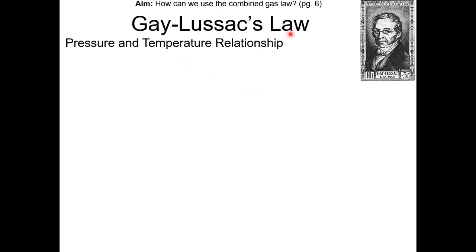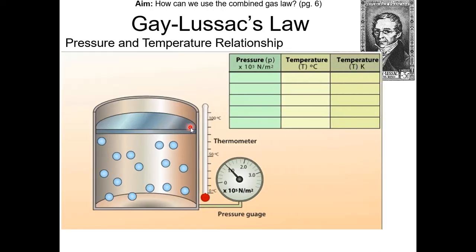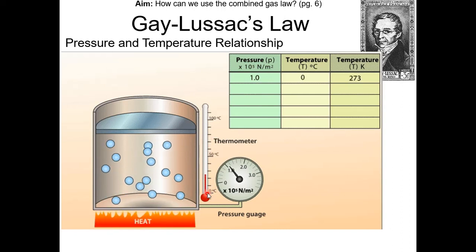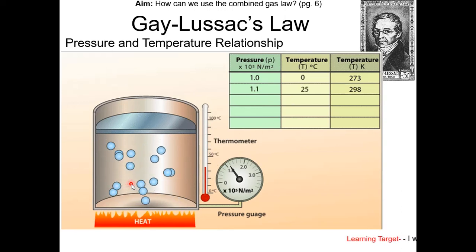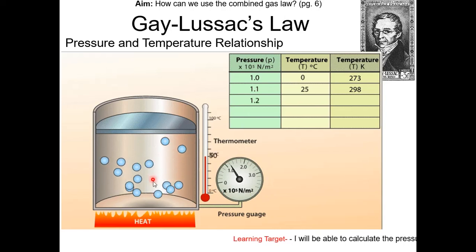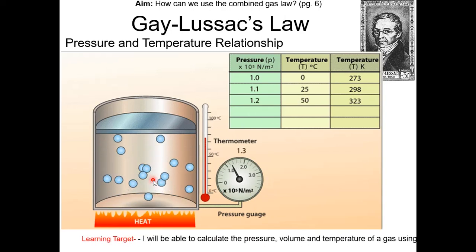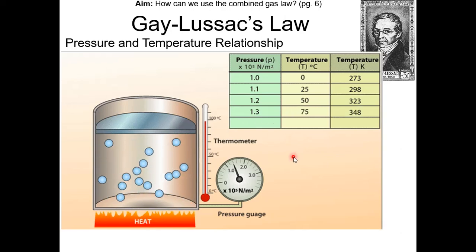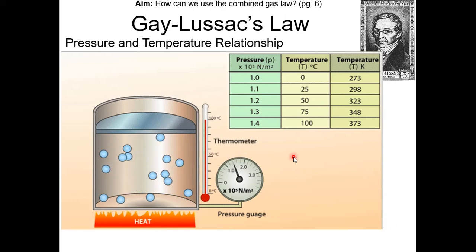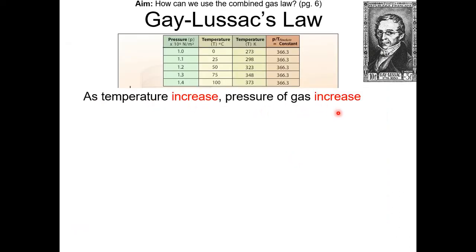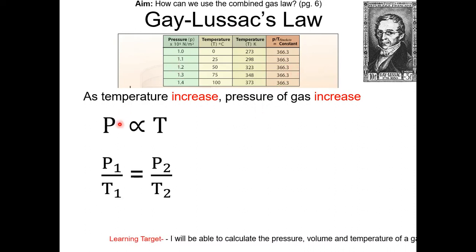The next gas law is Gay-Lussac's law, which deals with the pressure and temperature relationship, assuming volume is constant. In this GIF, we have a cylinder with no movable piston, so volume is constant. When we heat the container, temperature increases, gas molecules move faster, and pressure increases because molecules are hitting the walls more often with greater force. So temperature and pressure have a direct relationship — pressure is directly proportional to temperature. P1 over T1 equals P2 over T2.